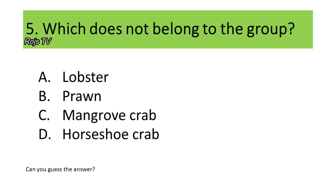Number 5. Which does not belong to the group? A. Lobster, B. Prawn, C. Mangrove Crab, D. Horseshoe Crab. Any answer?